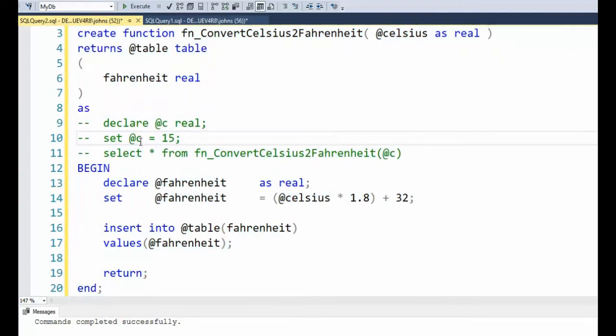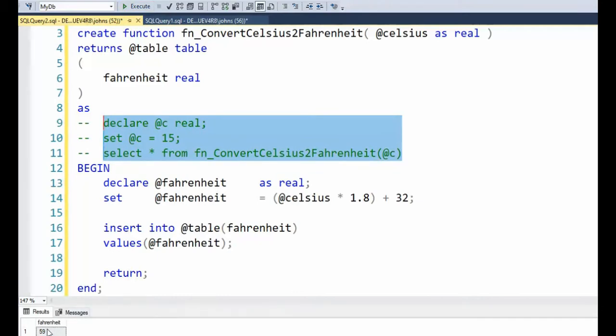Here you can see I have some sample code on how to execute a table valued function. Declare a variable. I'm going to set 15 to be Celsius. And then I'm going to say select star from that function. Let's highlight this and execute it. Execute. And notice my value is 59. And there you have it.